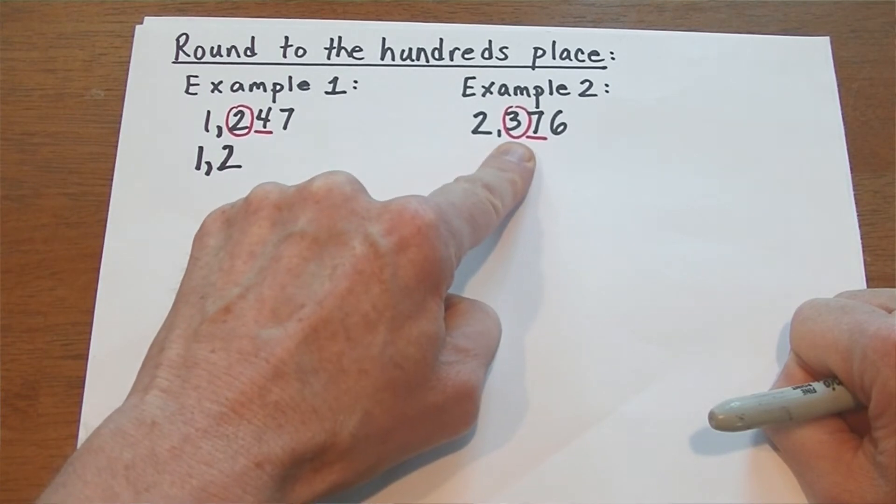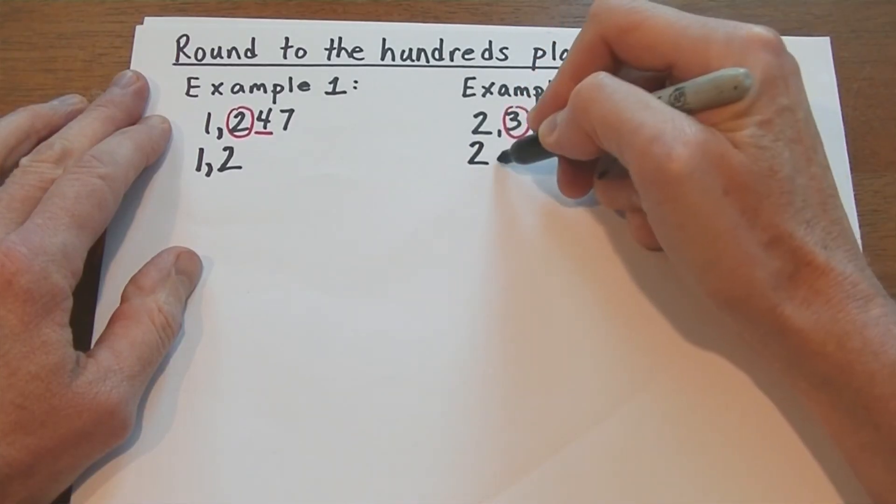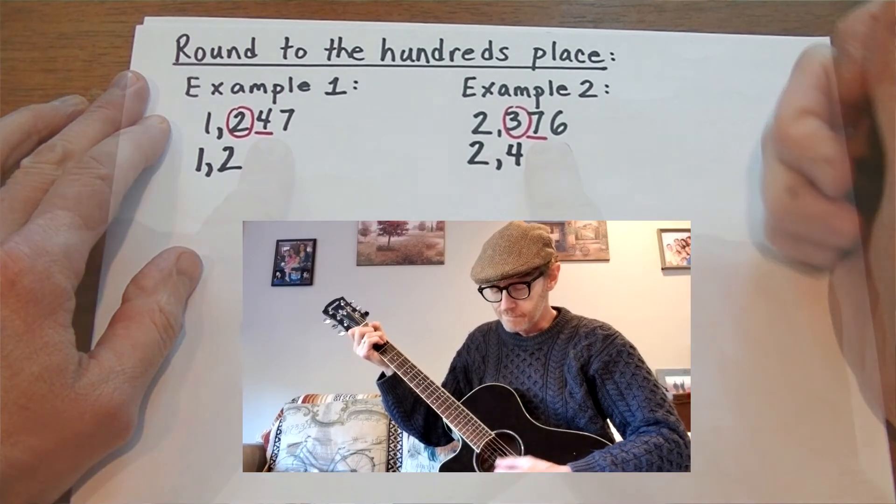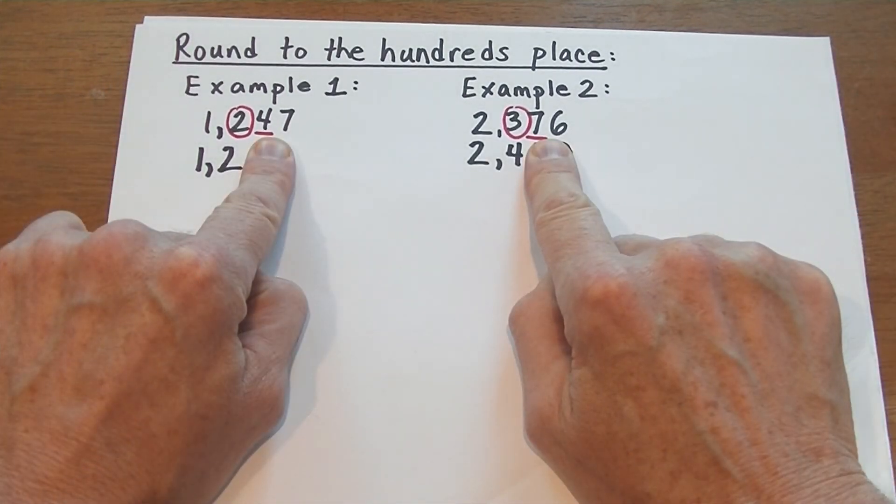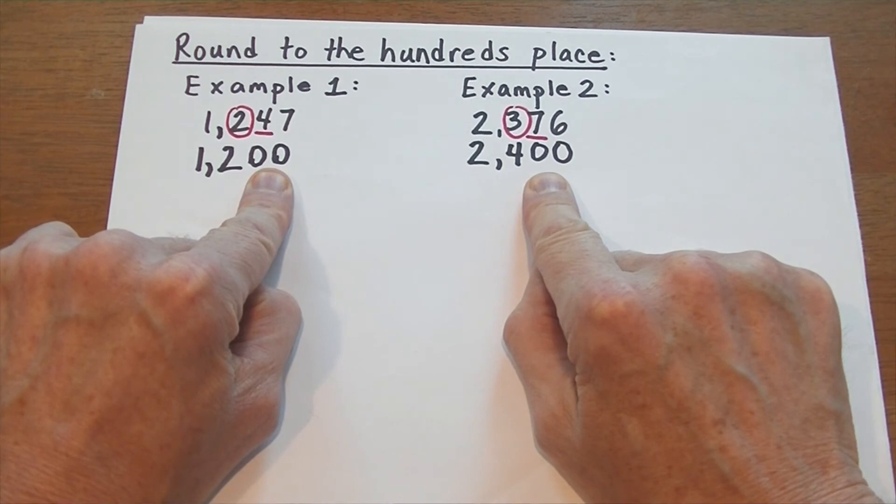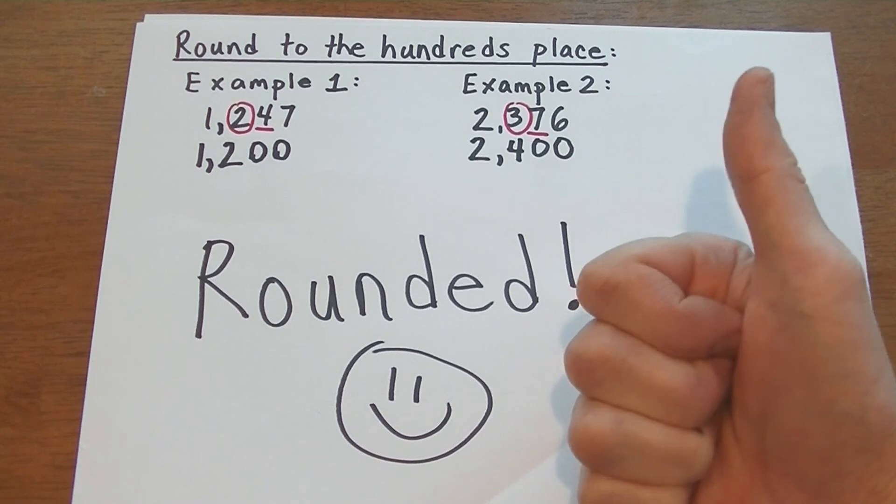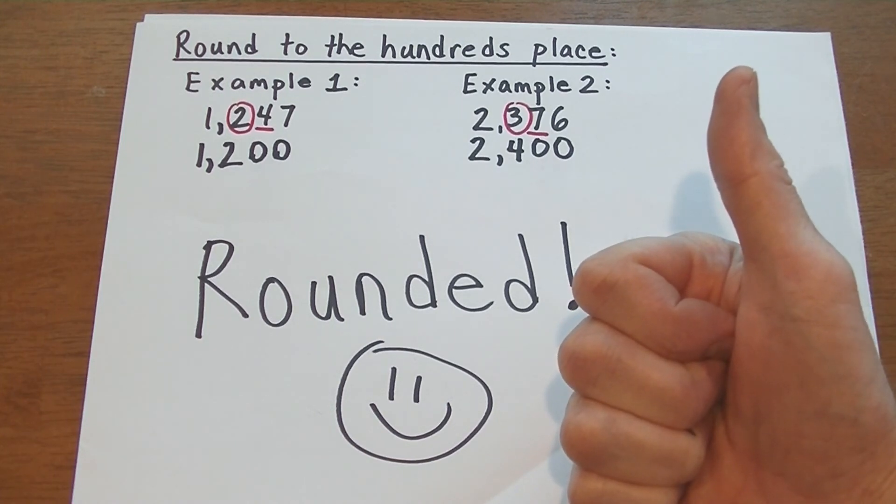Add one to the circled number and you're doing fine. Any numbers to the right become a zero then, and now the number's rounded. Congrats, and that's the end.